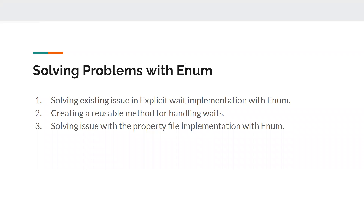Hi friends, welcome back to my channel Testing Minibytes. Today we will see how we can solve the problems with our implementation so far with the help of enum. If you have not watched the previous video, it is a must to understand what I'm going to teach now. So please make sure you watch the previous section. The agenda for today: we're going to solve the existing issue with our explicit wait implementation using enum, and create a reusable method for handling all these wait types, avoiding a lot of if-statements or switch cases in the base page. We'll also solve the property file implementation issue where we have hardcoded parameter values when calling the property file — we'll avoid that with enums as well.